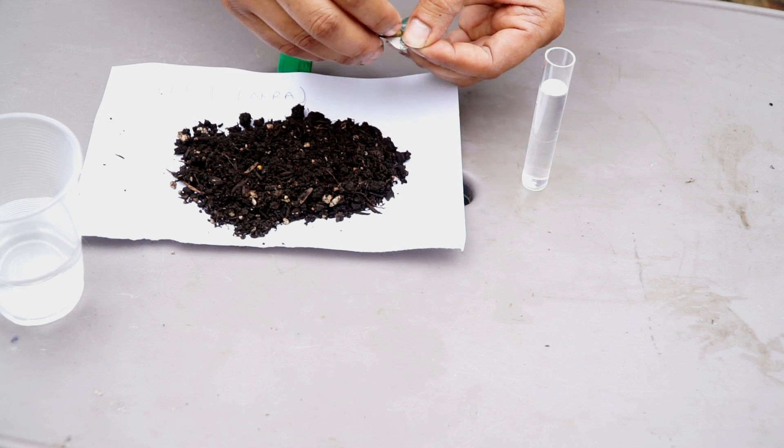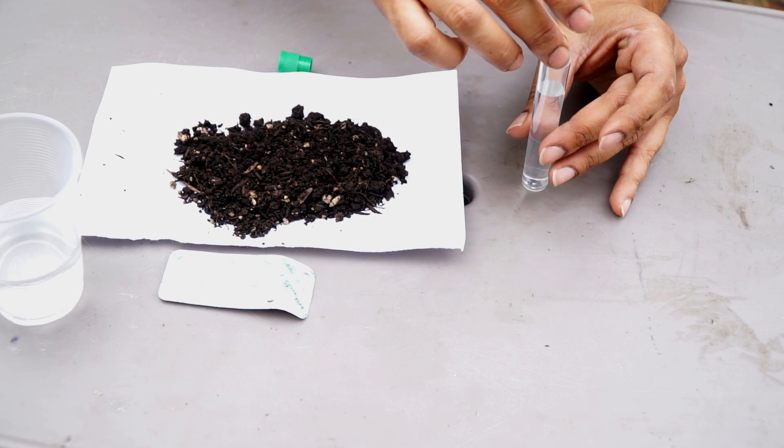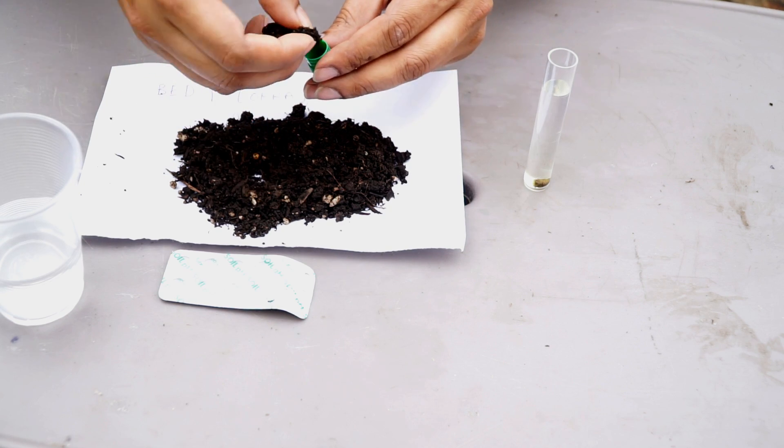To do the pH test, you add one test tablet of the pH test into the testing tube, and then you add a little bit of the soil sample to it.